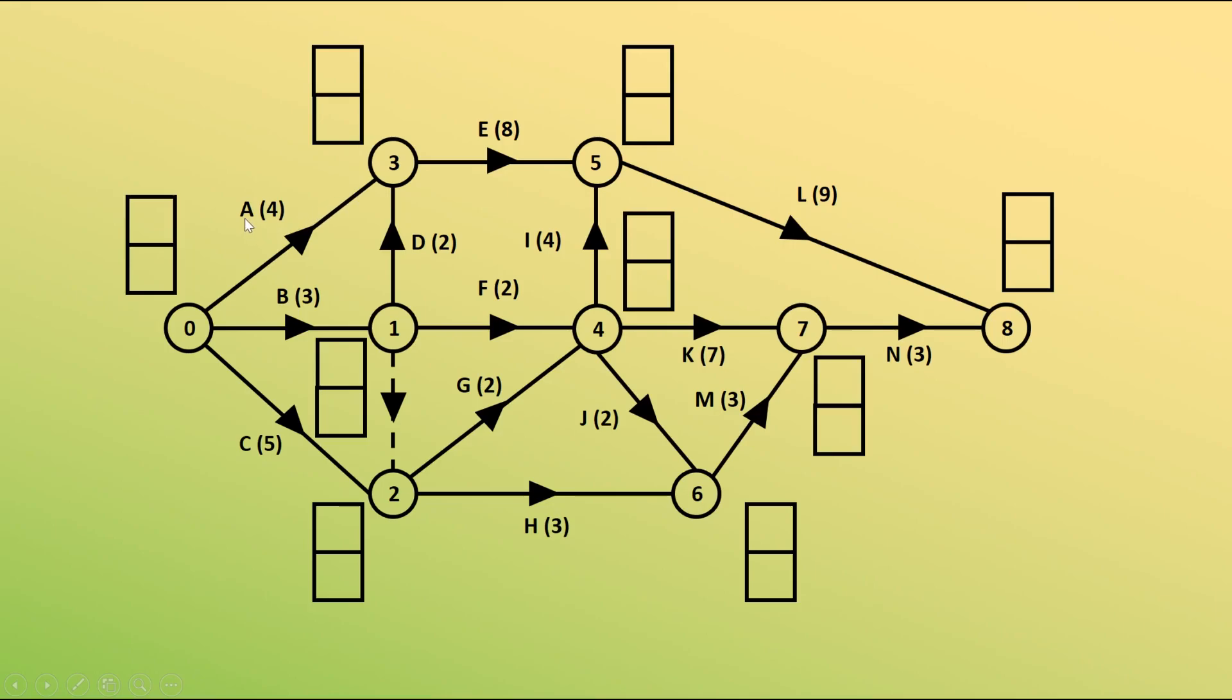The letters are representing the name of the activity and the number in brackets is representing the duration of that activity, so for hours, for days, whatever it might be.